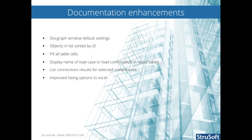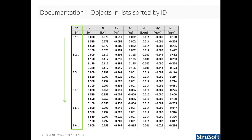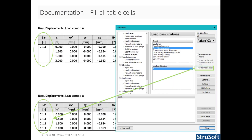This category shows the enhancements in the documentation. You can save the window settings for doc graphs as default by clicking the save as default button in the settings dialog. All window settings saved as default will be applied to all new graphical windows. Objects in lists are now automatically sorted by ID. New checkboxes named 'fill all table cells' are added to the list tables and to the table properties in the documentation module. When one of them is checked, all the cells of the specified table will be filled.